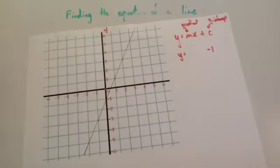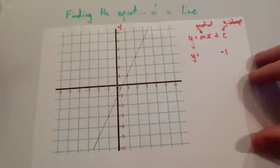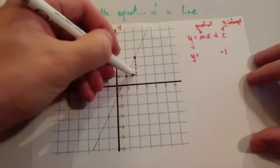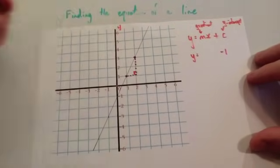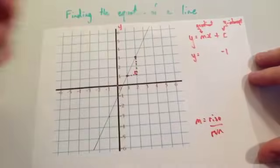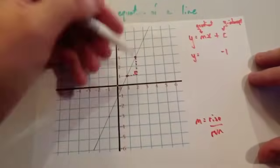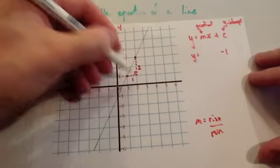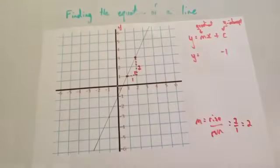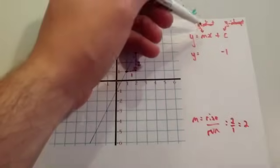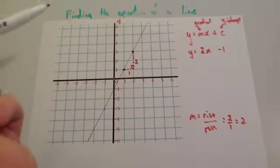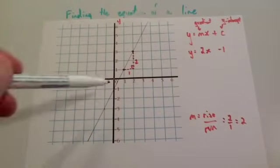Now we need to find the gradient. We're going to choose two points on the line and turn it into a right-angled triangle. Remember, the gradient is m equals rise over run. So the rise is 2 and the run is 1. Two divided by 1 equals 2, so the gradient of the line is 2. We replace m with 2, so we write 2x. The line is y equals 2x minus 1 — a gradient of 2 and it crosses at minus 1.